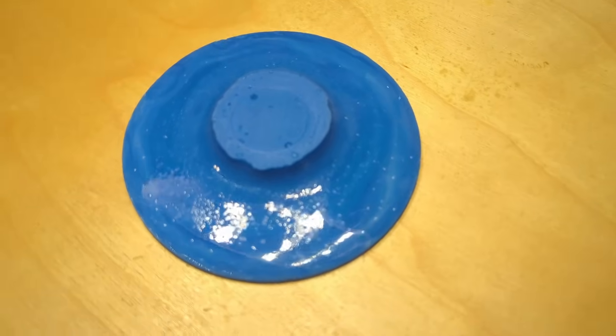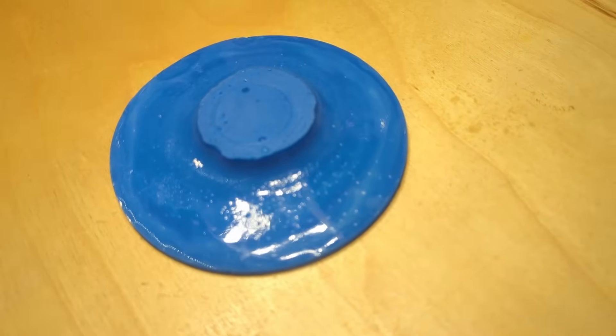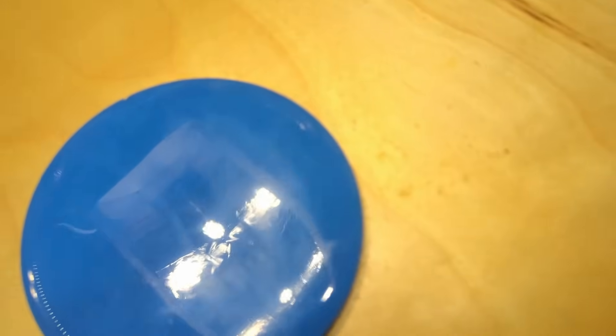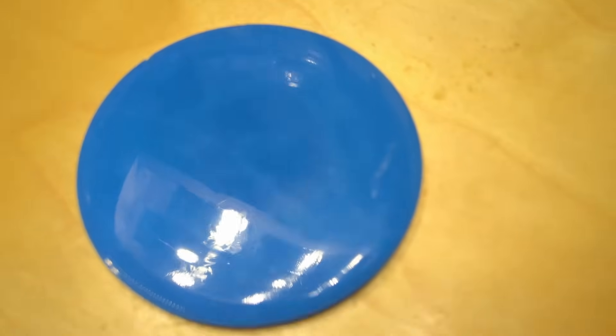However, the brine also encountered the same bubbling issue as the corn syrup. By far, the best was the glycerin. Although there were a couple bubbles, it left a very smooth surface overall. But this still wasn't usable because there was a waviness that was distorting the reflection.